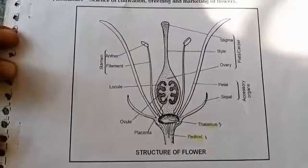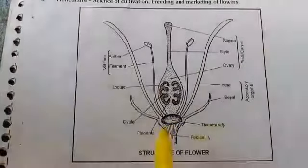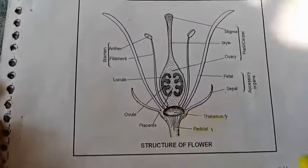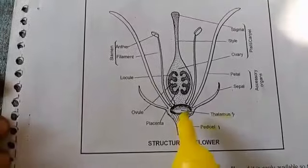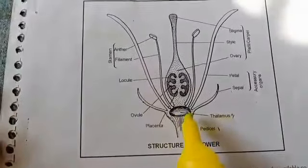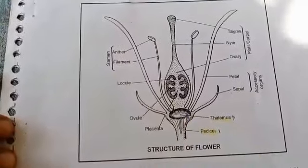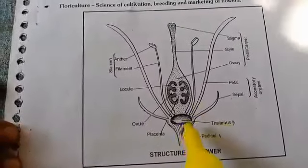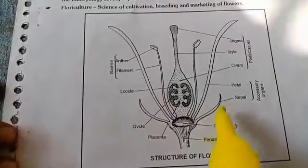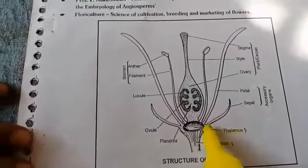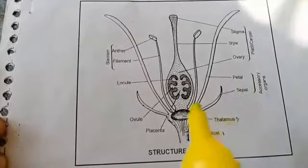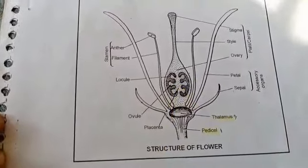In the thalamus, nodes are very close to each other, so internodes are small or highly reduced. The floral parts arise from the thalamus. You can see the floral parts: the first floral part, calyx, arises at the first node; corolla at the second node; androecium at the third node; and gynoecium at the fourth node.